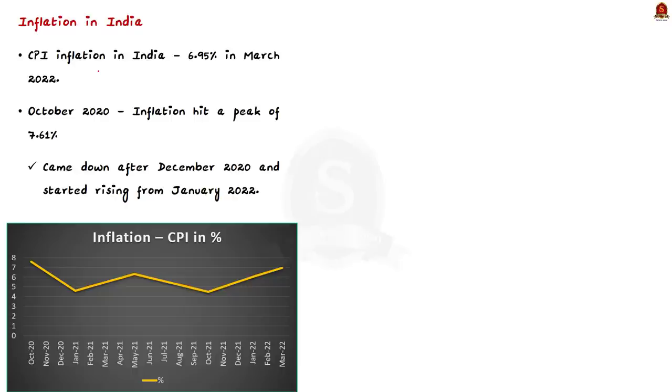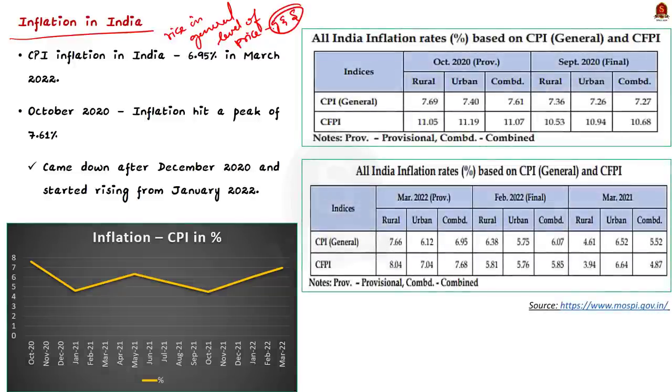As you know, inflation is the rise in general level of prices of goods and services. So, that means when there is inflation, prices of most of the goods have gone up. Now, if you look at the data, as of October 2020, that is one and a half years before, inflation hit a peak of 7.61 percentage. And it remained at a high level of over 6 percentage since April 2020 at that time. It only came down after December 2020.